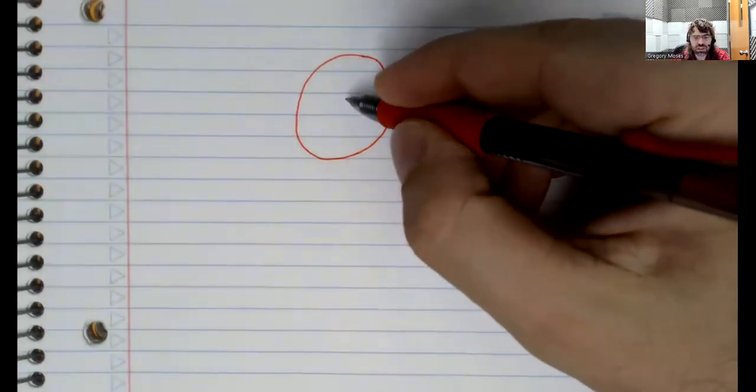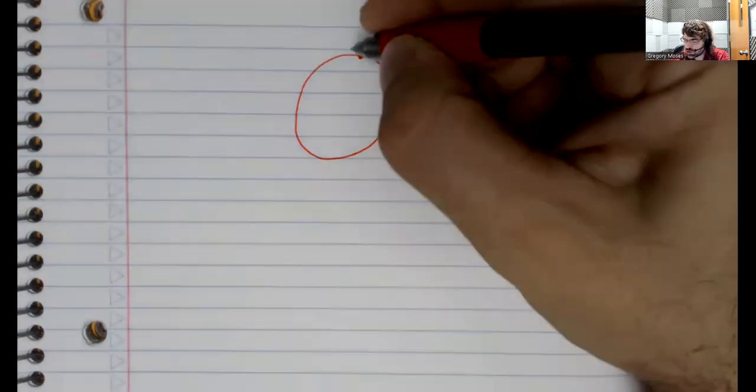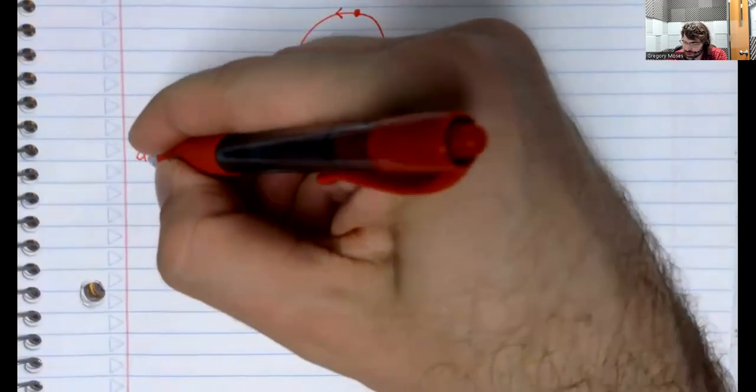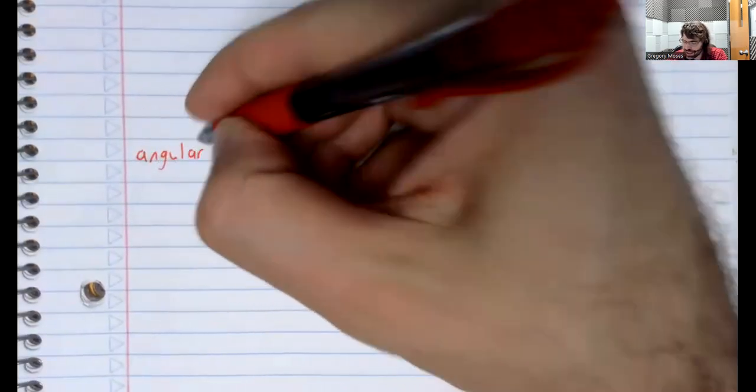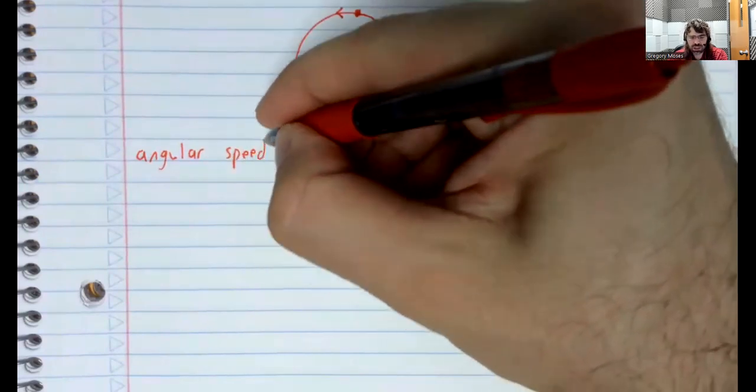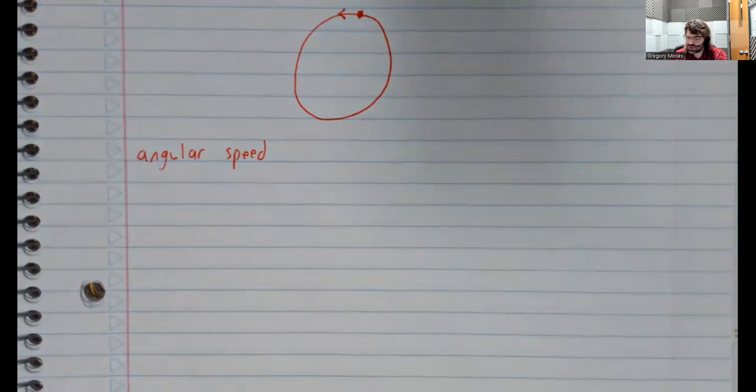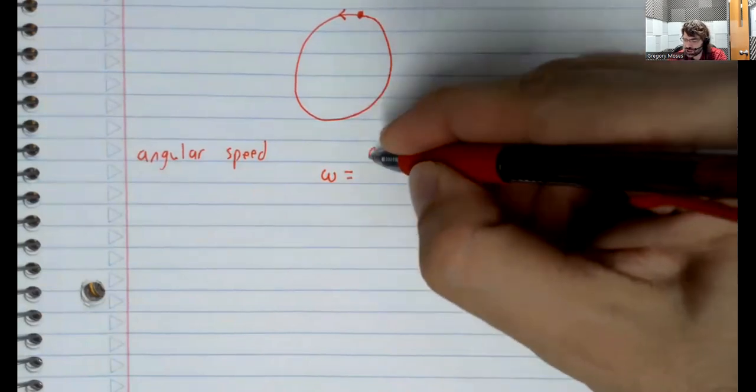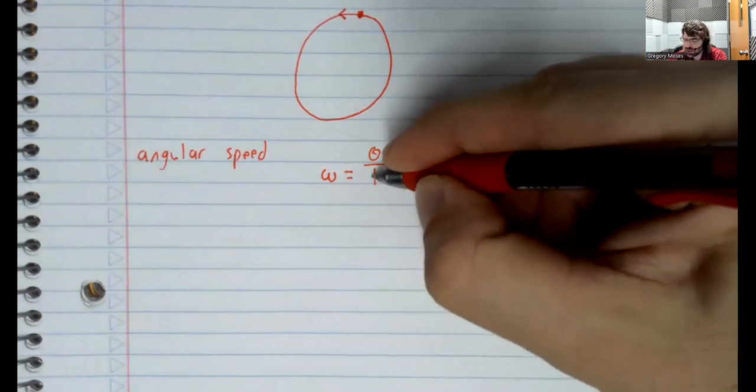Say that we have a circle, and we have a point on the circle, and the point is rotating. Clockwise, counterclockwise, doesn't matter for our purposes. We can define two types of speed. I know I just used the word velocity. Let's say speed instead. We can define the angular speed. And the angular speed is defined as angular rotation per time unit.